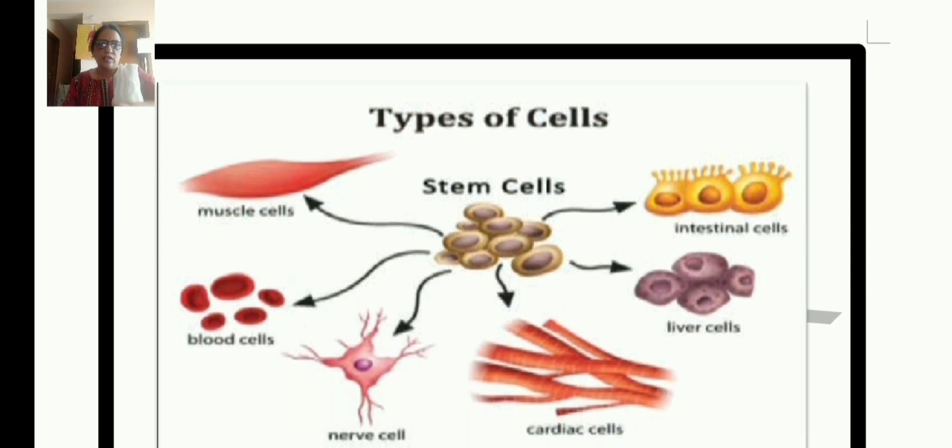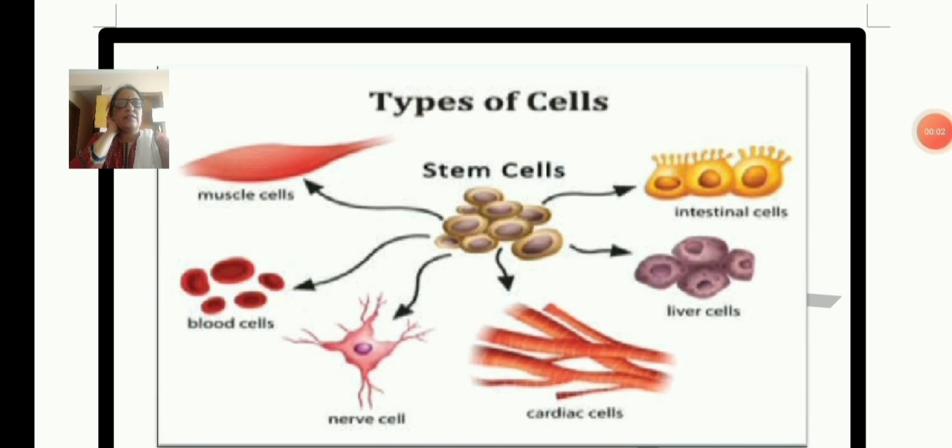Types of cells. Sorry for the background disturbance. Types of cells: stem cells, muscle cells, blood cells, nerve cell, cardiac cells, liver cell, intestinal cells.